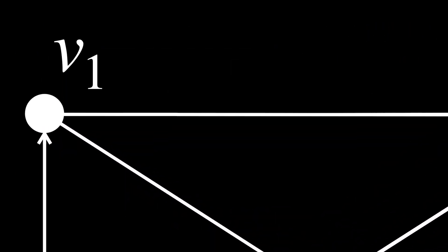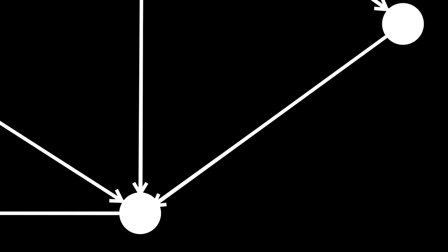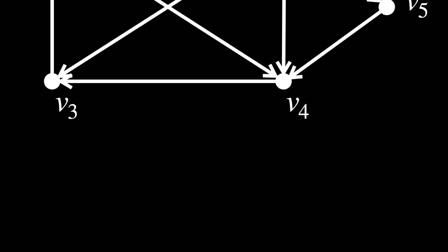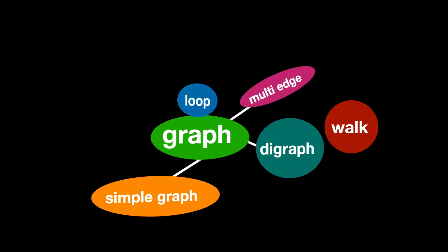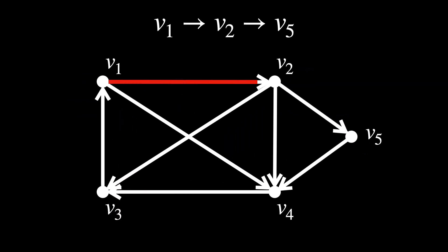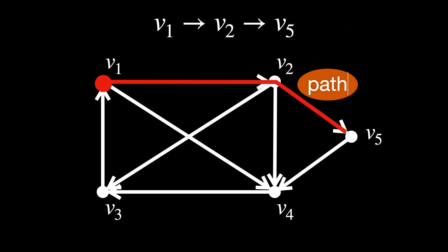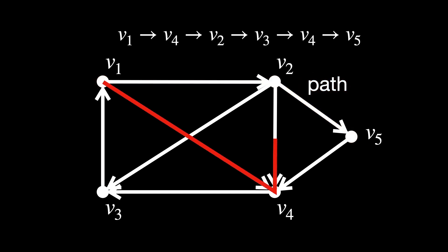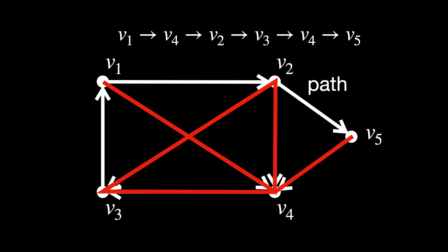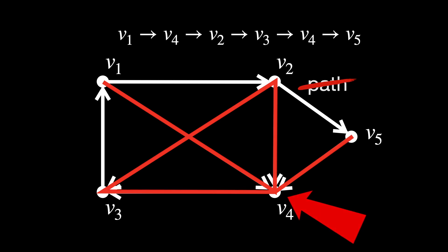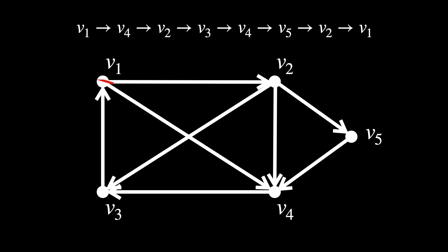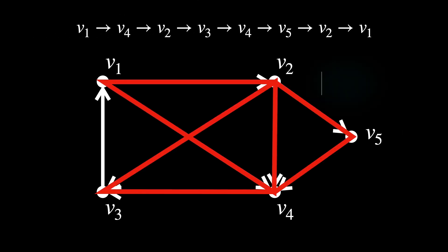Much of graph theory revolves around talking about ways of getting from one vertex to another, which is known as walks. In our graph, v1, v2, v5 is a walk of length 2, for example. This walk is also a path, because no vertex appeared more than once. But if we take the walk v1, v4, v2, v3, v4, v5 — there is a vertex that repeats twice, so that's not a path. What if I want to round back up to v1? Well, that's a cycle.